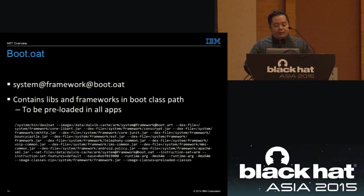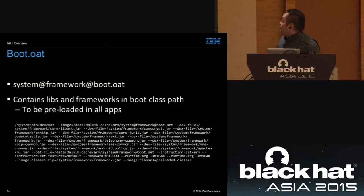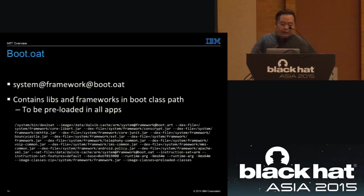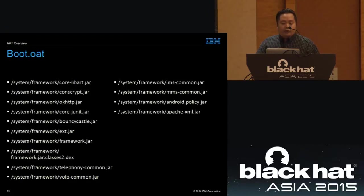The boot.oat file is a master file where all the most commonly used frameworks and libraries in Android are compiled. It's a single OAT file containing code from different framework JARs in the boot class path. These are all preloaded into your installed applications. An example command line for dex2oat when generating boot.oat includes many --dex-file parameters, each pointing to a single framework JAR found in the system framework folder. All are compiled into a single boot.oat file.